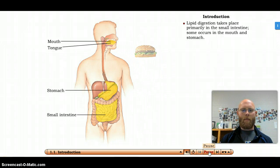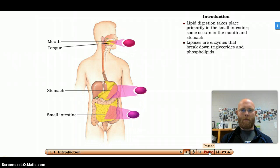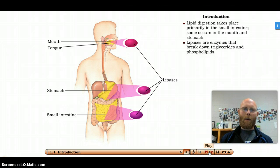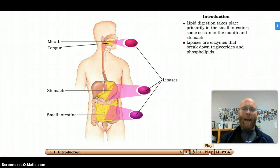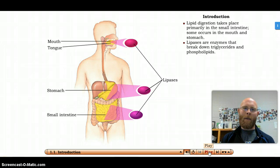Special enzymes called lipases break down triglycerides, the most abundant lipids in the diet, and phospholipids. Can you tell me how it got the name lipases? Enzymes are often named by what they act upon — if you see the ending A-S-E in biology and biochemistry, we're dealing with an enzyme, and the prefix comes from what they break down or put together.